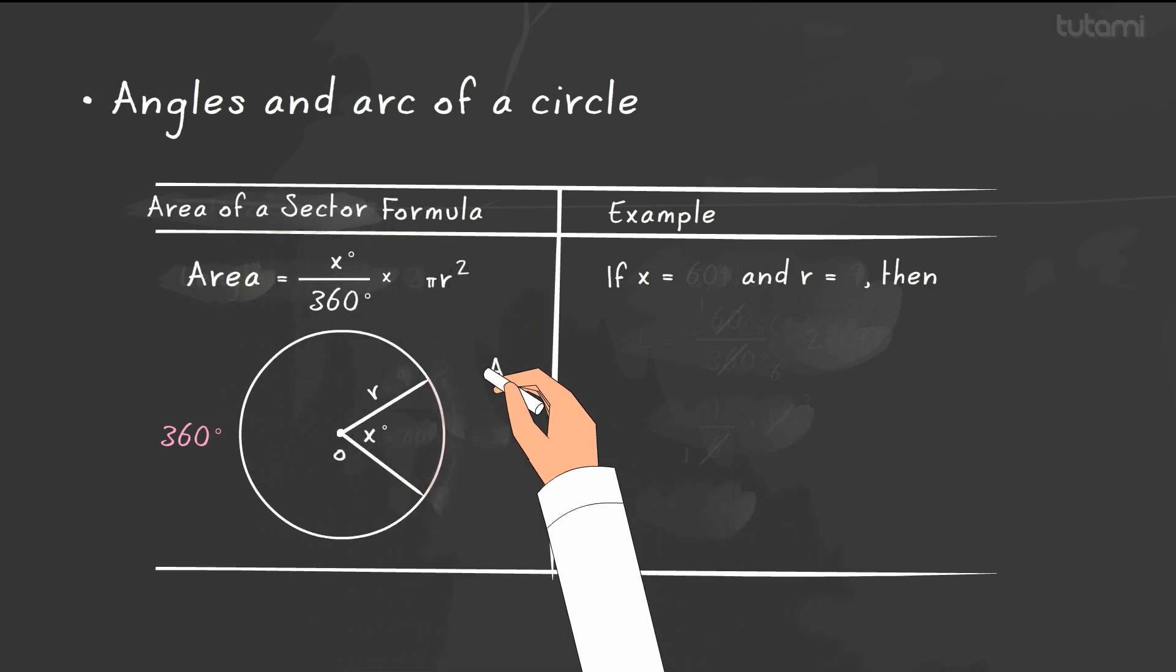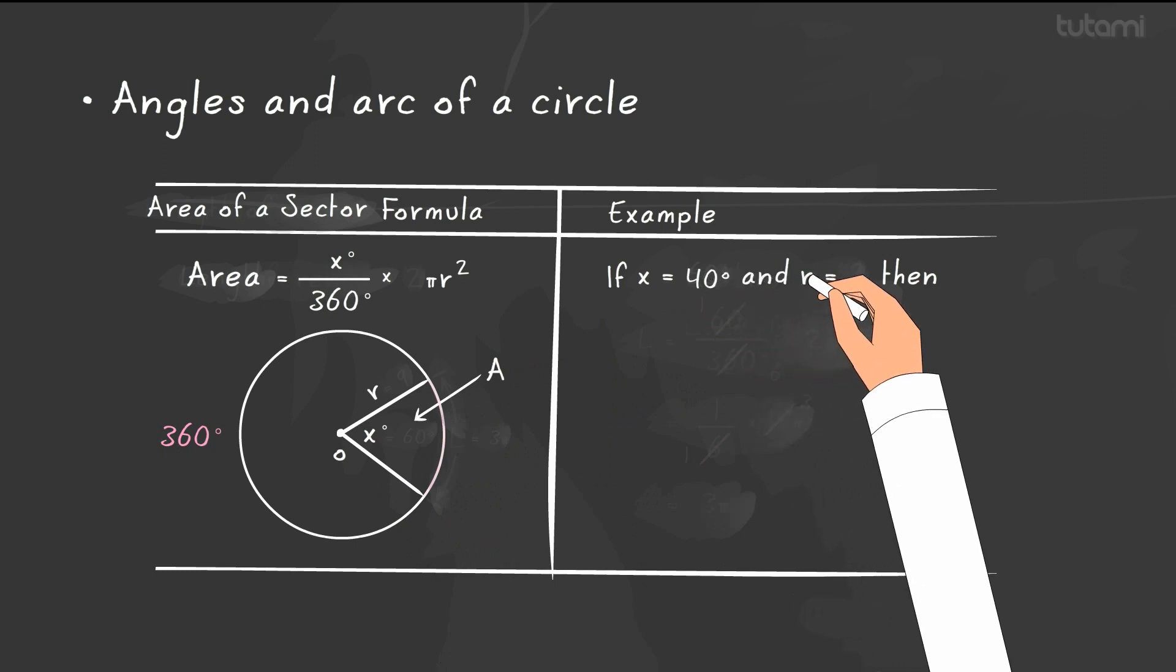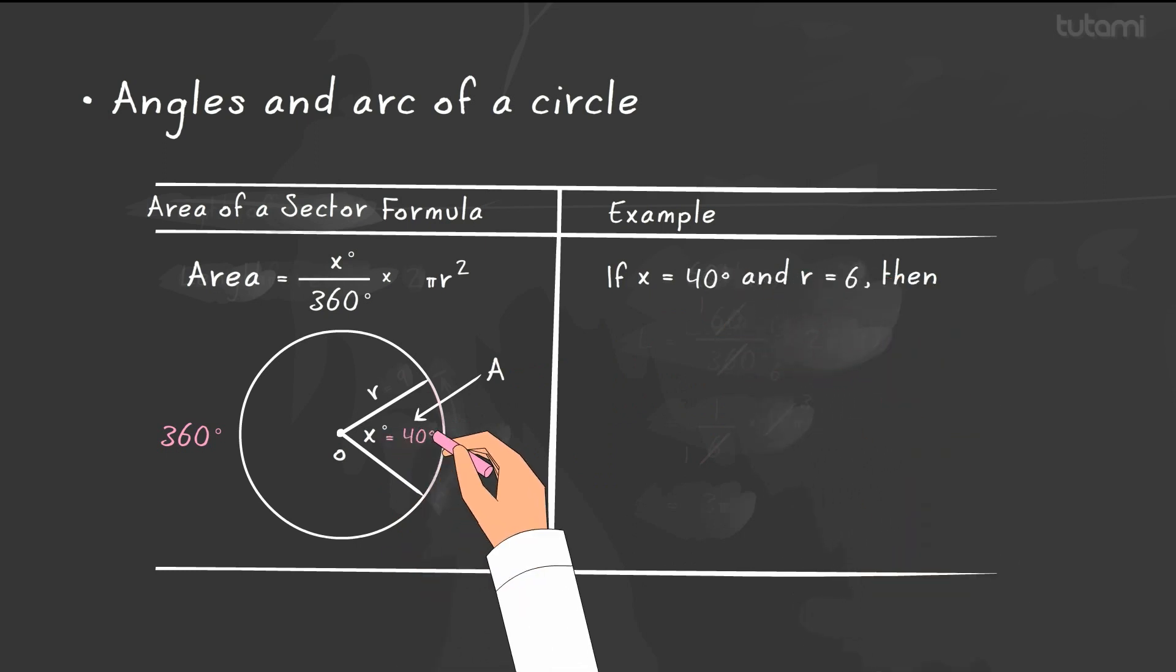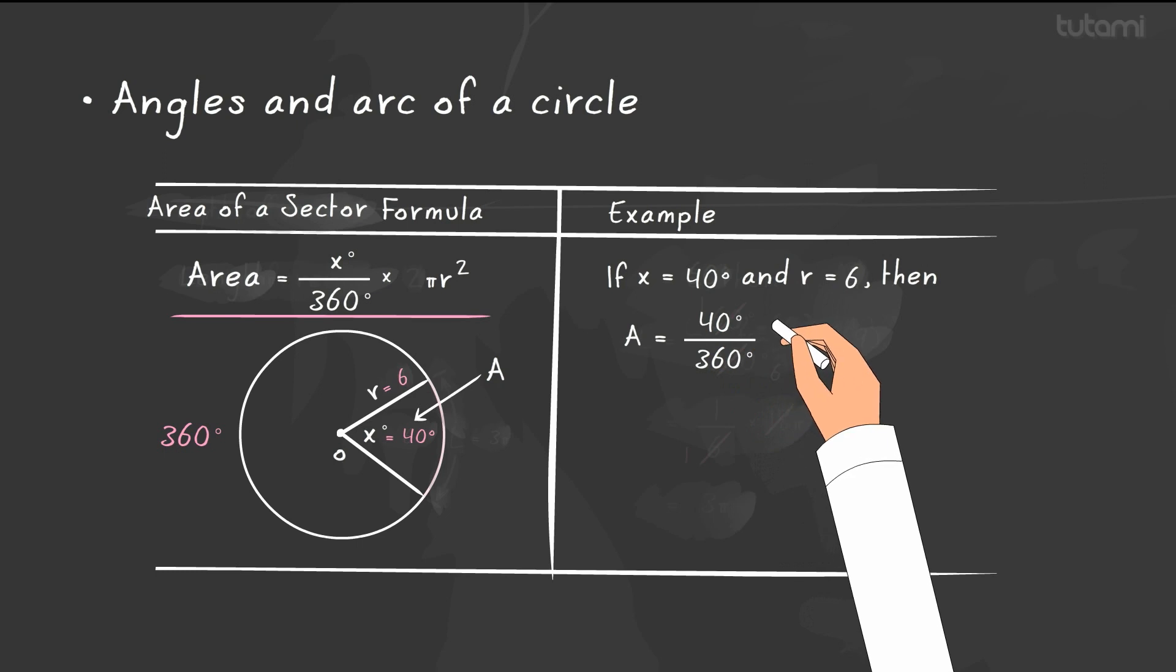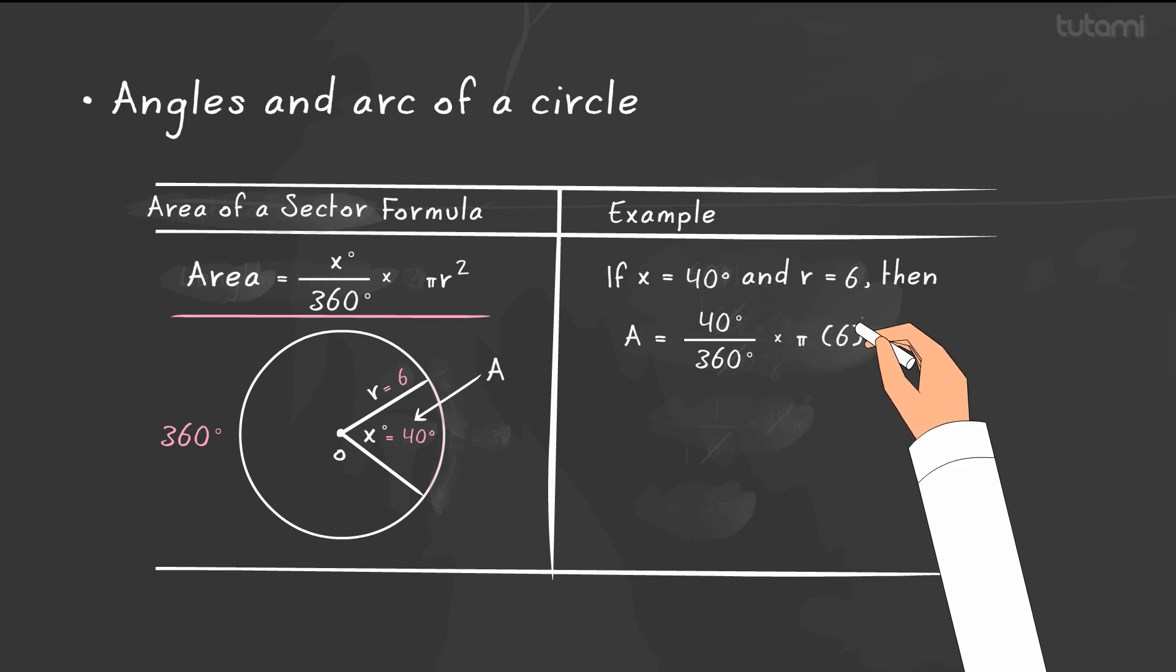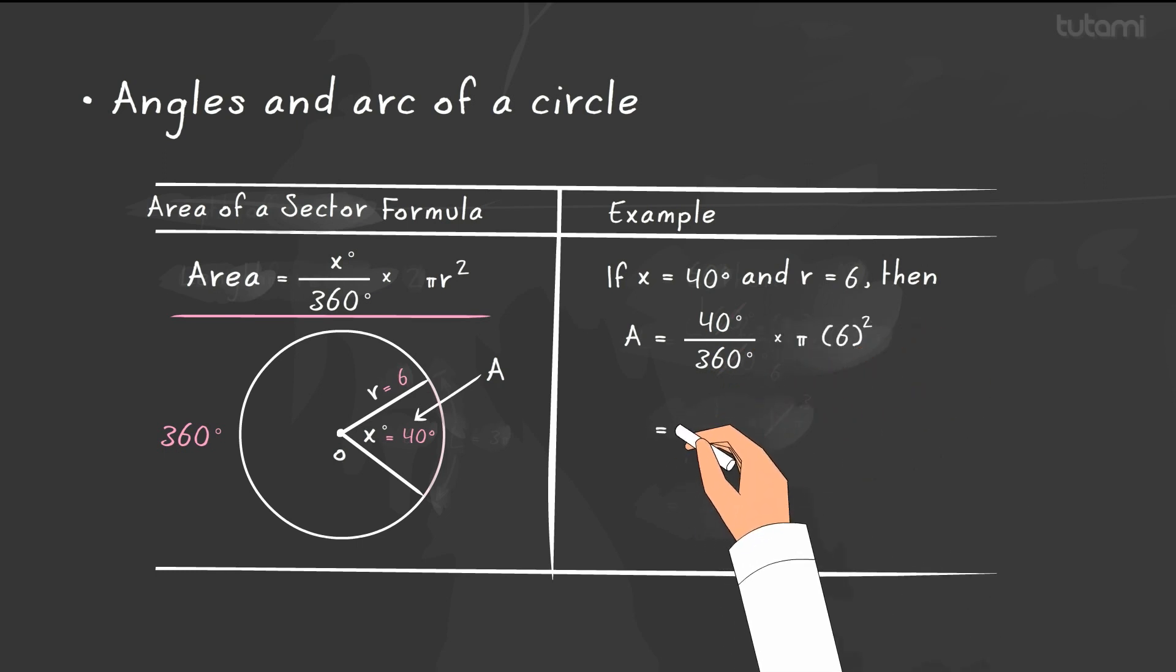Similarly, if the value of x degrees is 40 and the radius is 6, then the area of a sector formula is n degrees over 360 degrees times πr². So if n is 40 and r is 6, then we have 40 over 360 times π(6²), or 1/9 times 36π, which gives us 4π.